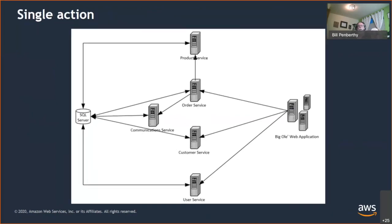A typical request flow: the web app calls the user service for authorization and authentication, then calls the customer service for customer information, then calls the order service with the submitted order. The order service saves the information, calls product information to decrement the available product count, and calls the communication service to send the order confirmation email — five different services involved. In other business flows, the website does some orchestration and hands off to a service, which handles persistence and then performs additional processing based on its defined business rules.